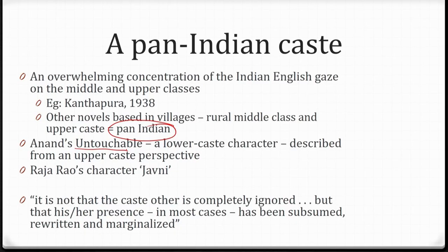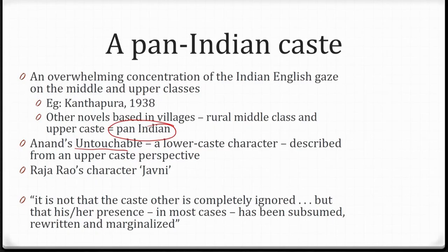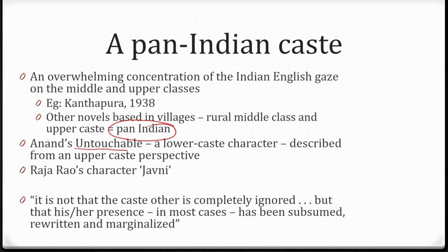Khair alerts us to certain different kinds of depictions which are rare exceptions in Indian English fiction. He talks about the novel Untouchable by Anand, which we shall be looking at in detail this week. There is a lower caste character Bakha, but the character of Bakha is also described from an upper caste perspective — a problem we shall look at in detail shortly. There is also Raja Rao's character Javni from his short story The Cow of the Barricades. If you ask whether lower caste characters have been presented — yes, there is a presence. But in what ways are they presented? Therein lies the challenge and the problematic.